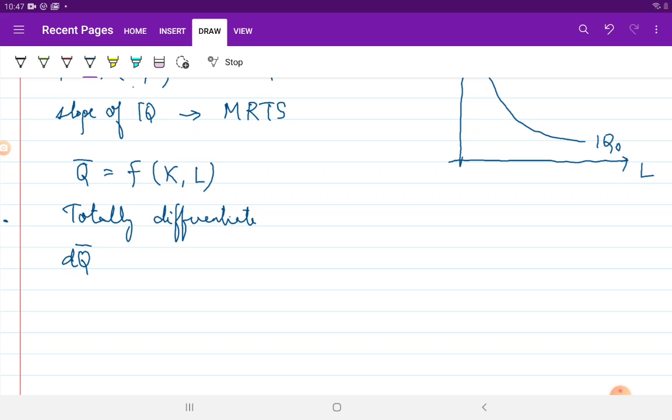Remember, for simplification purposes, I am sticking to a two-input production function. So, this is the slope of my iso-quant by totally differentiating it. I will get dQ bar is equal to ∂Q/∂K times dK plus ∂Q/∂L times dL.